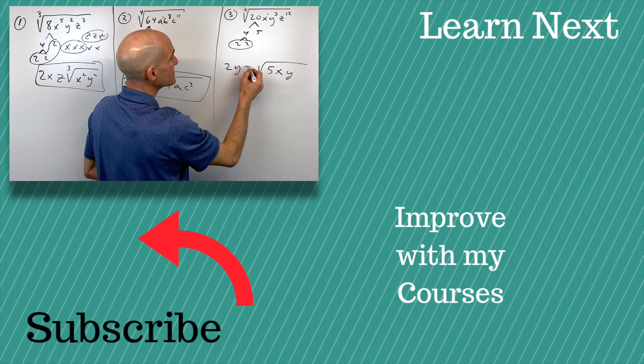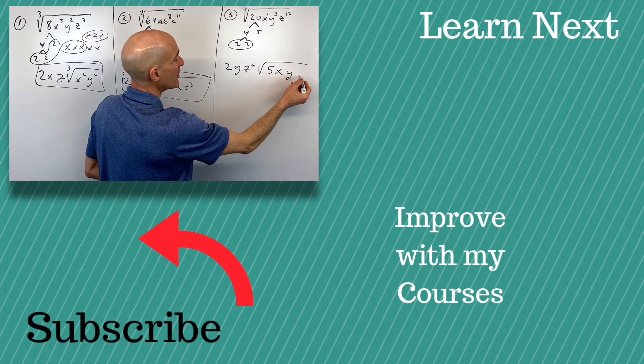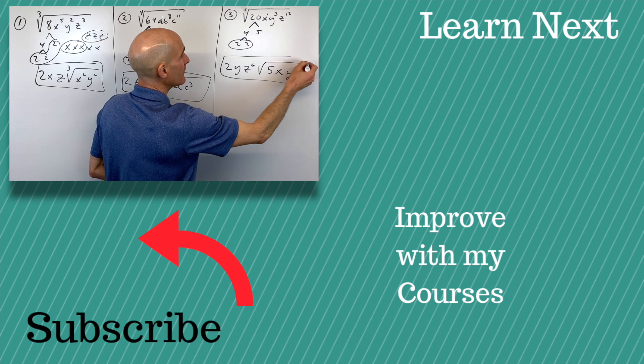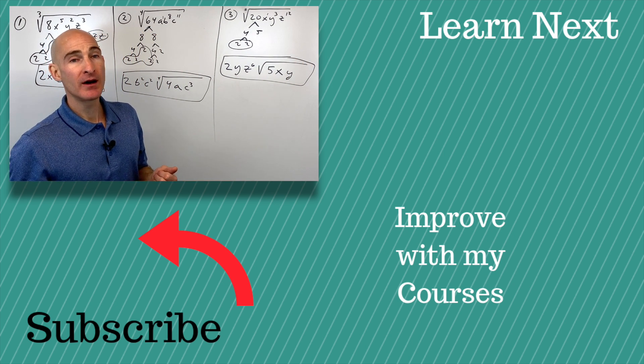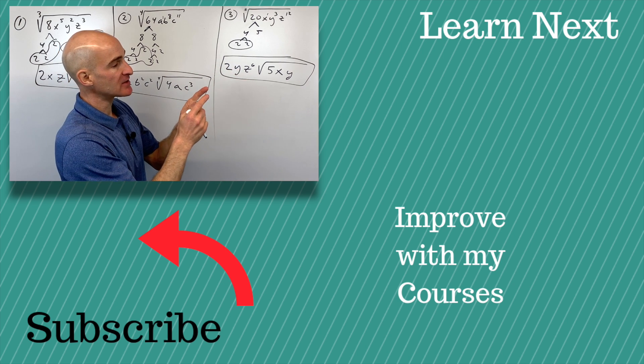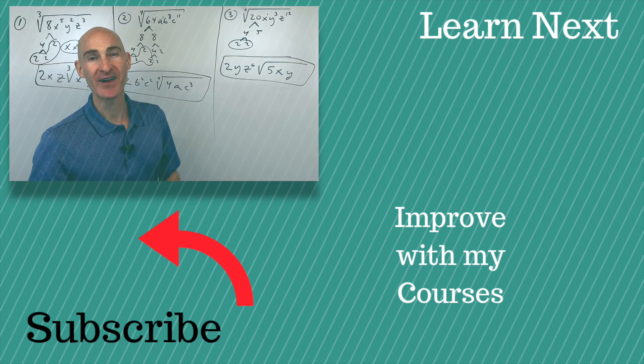And 2 goes into 12 6 times. So that's z to the 6th with none left over. And you've got it. So this has been Mario with Mario's Math Tutoring. If you want to see more videos regarding simplifying radicals, check out the next video I did right there. And I'll see you over in that video.